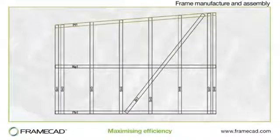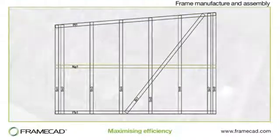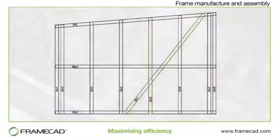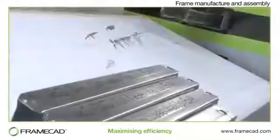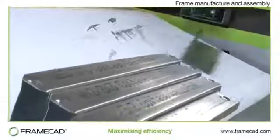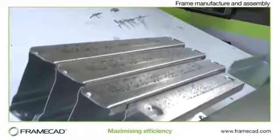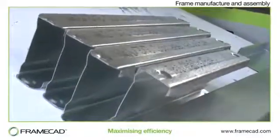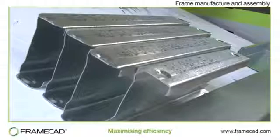Top and bottom plates, horizontal noggins, and blocking are manufactured first. Then the studs are produced from left to right. This makes assembly faster and easier. Each component is printed as it is manufactured with details that identify how it is to be assembled.